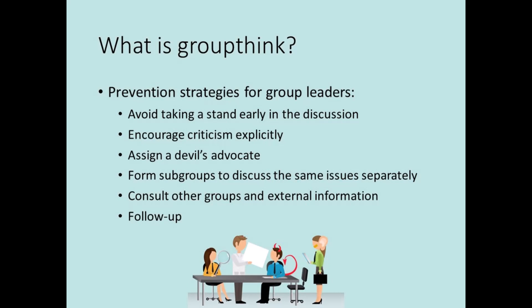Social psychologists have found evidence that these strategies can help group leaders prevent or minimize groupthink. First, remain neutral — avoid taking a stand early in the discussion. Second, encourage criticism explicitly: ask questions, evaluate pros and cons, and assume there's always room for improvement. Third, assign a devil's advocate to challenge assumptions and ideas. Fourth, form subgroups — each one can discuss the same issue separately from the larger group. Fifth, consult other groups and external sources of information; never assume the group has all the information it needs. Sixth, plan for multiple discussions to collect additional information and make the best decision.